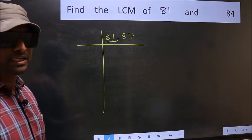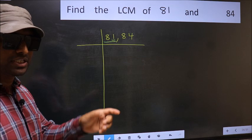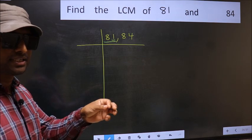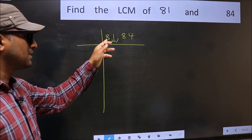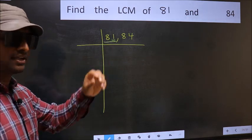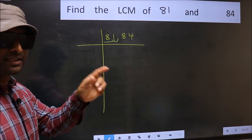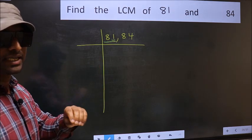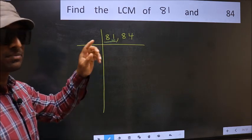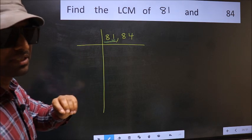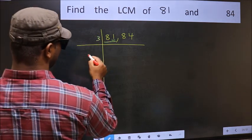To check divisibility by 3, we should add the digits: 8 plus 1, we get 9. And 9 is divisible by 3, so this number is also divisible by 3. So take 3.